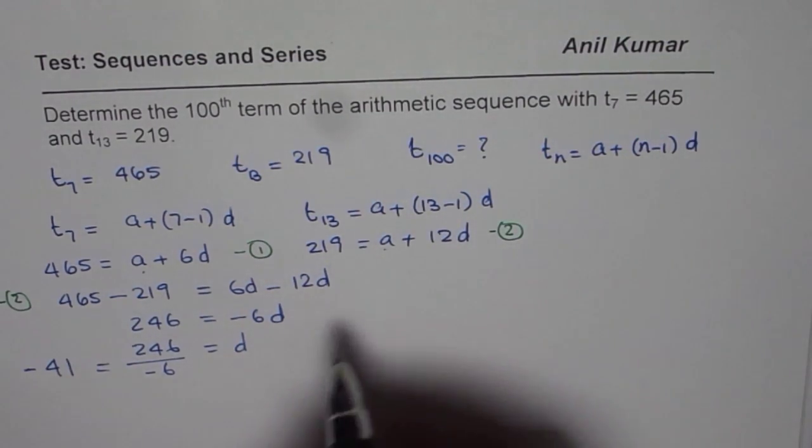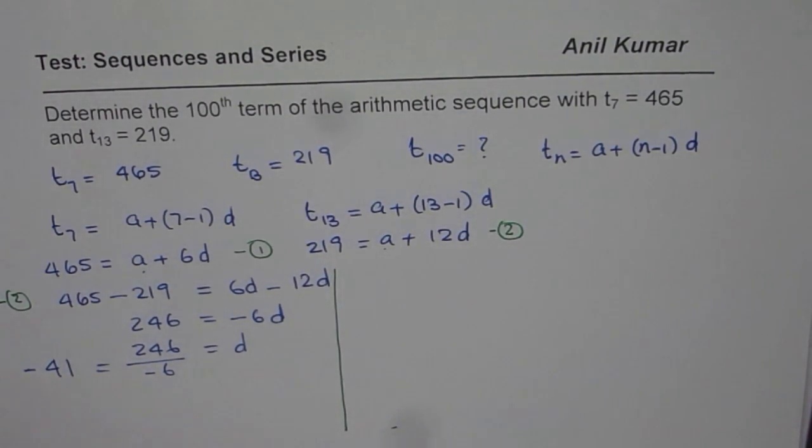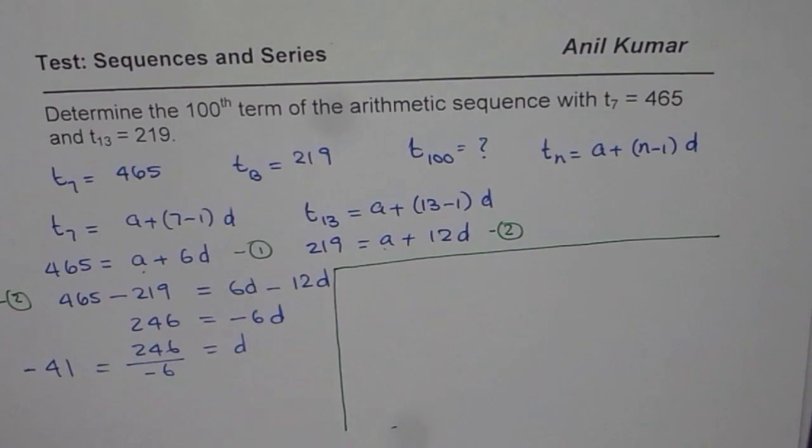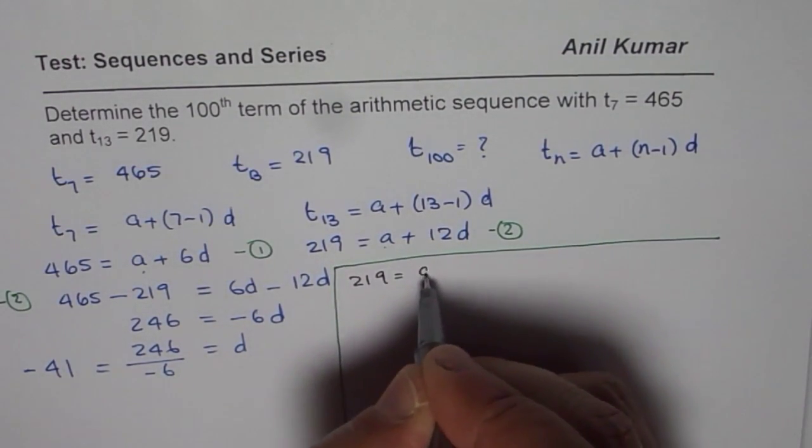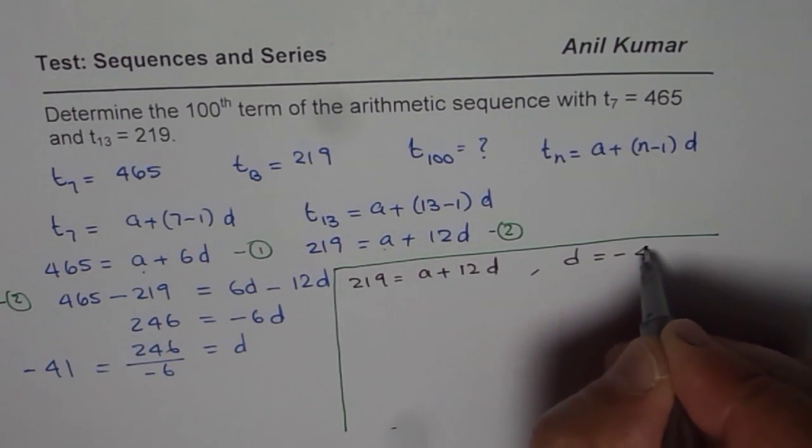Now once you know D, you can always find A. So let us find A now. We could find A using either equation 1 or 2, any one of them. So D is minus 41. Let me draw a line here, otherwise it may create confusion. So now what we know here is we will use the equation 219 equals A plus 12D, and we know D equals minus 41.